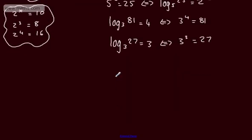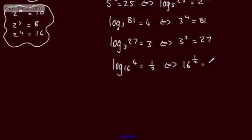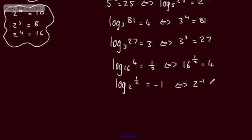Let's look at a slightly trickier example. Log to the base 16 of 4 — what power is 16 raised by to get 4? The answer is the one-half power: 16 to the half equals 4, so we can write 16 to the power of one-half equals 4. Now, log to the base 2 of one-half — what power is 2 raised by to get one-half? The answer is minus 1. Therefore, the exponential equivalent is 2 to the minus 1 equals one-half. Remember, the log is simply the power we raise 2 by to get one-half.